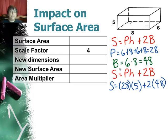Substituting into the formula, we have 28 times 5, because the perimeter times the height, plus 2 times the area of the base. And I get 236 square units. Now I'm going to apply a scale factor of 4 to this. So all of these dimensions grow by a factor of 4. 5 becomes 20, 8 becomes 32, and 6 becomes 24.